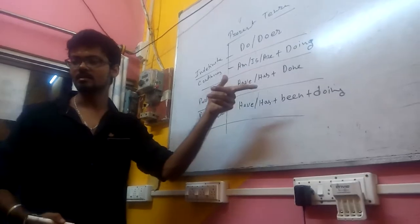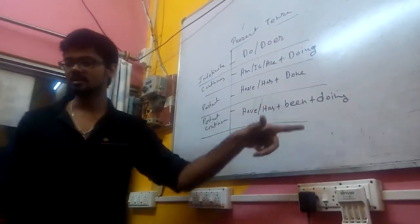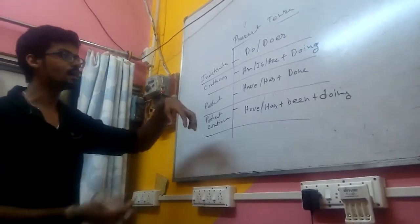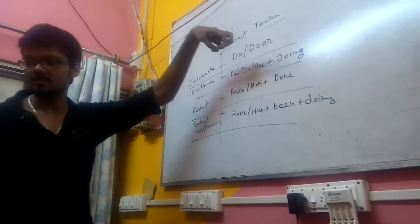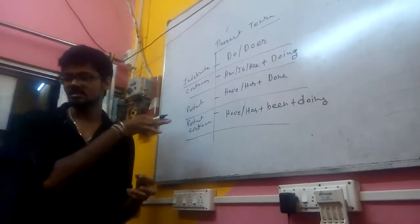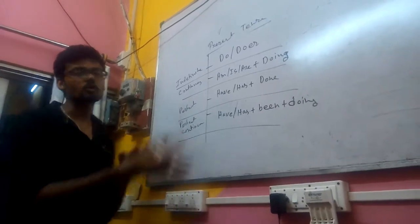'Have I done?' 'Have I been doing?' When we take the auxiliaries from the structures and place them in front of the subject, it converts into a question.